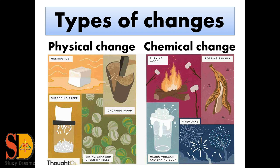Now we have types of changes on the basis of changes that occur in objects, like shape, size, color, and property. We have two types: first is physical and second is chemical. Some examples of physical changes are melting ice, chopping wood, shredding paper, and mixing marbles. Examples of chemical changes are burning wood, rotting banana, mixing vinegar and baking soda, and exploding fireworks.